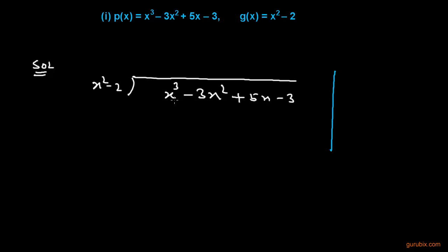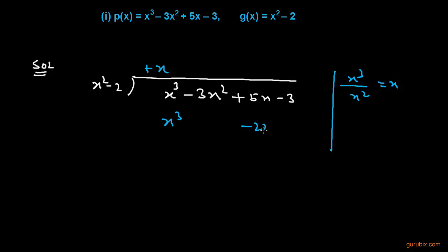To find the first term of the quotient, we shall divide the first term of the dividend — that is x cubed — by the first term of the divisor, which is x squared. Then we get x, so the first term of the quotient is x. Now we shall multiply x with x squared minus 2, giving us x cubed minus 2x.